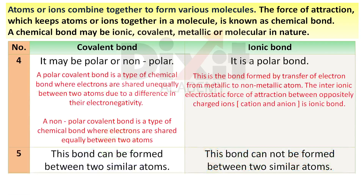Point number 4. Covalent bond may be polar or non-polar. A polar covalent bond is a type of chemical bond where electrons are shared unequally between two atoms due to a difference in their electronegativity. A non-polar covalent bond is where electrons are shared equally between two atoms. Ionic bond is a polar bond, formed by transfer of electron from metallic to non-metallic atom, with inter-ionic electrostatic force of attraction between oppositely charged ions.